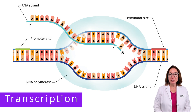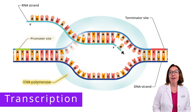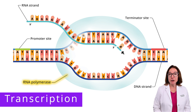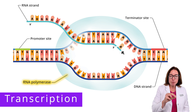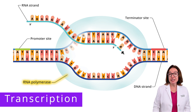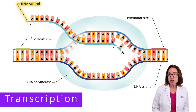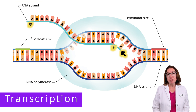Initiation of transcription begins at the promoter site on the DNA strand. RNA polymerase binds to the promoter site and then moves along reading the DNA template. It synthesizes a complementary RNA strand, adding new nucleotides in the 5' to 3' direction only.